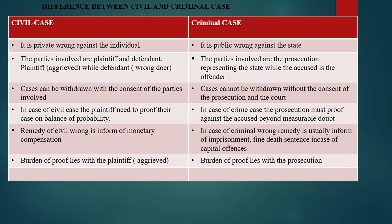Let us now understand some differences between civil and criminal cases. A civil case is a private wrong against an individual, whereas a criminal case is a public wrong against the state. In civil cases, the parties involved are the plaintiff, who is the aggrieved party, and the defendant, who is the wrongdoer. In criminal cases, the parties involved are the prosecution representing the state, and the accused who is the offender.